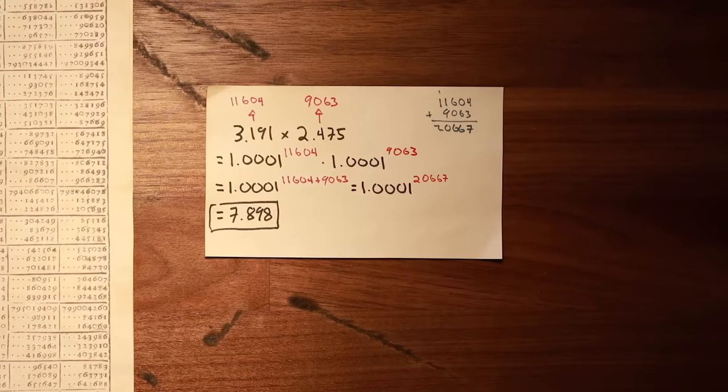Notice that we didn't have to multiply anything. The only math we had to do was adding together 11604 and 9063. And with an extra interpolation step, Berge's table gives answers accurate to 7 decimal places.